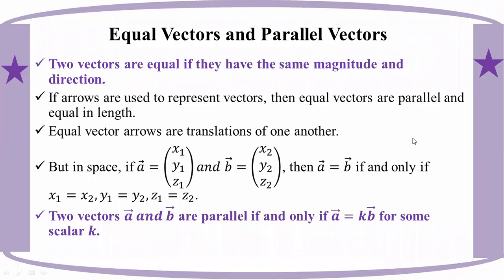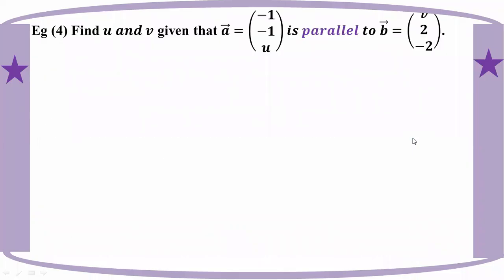It will get a straight line. Number four: find u and v, given that the vector e minus u is parallel to the vector with components 2 and minus 1.